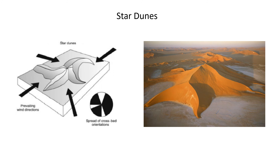Star dunes are sand ridges with a high central point and three or more converging arm ridges, formed in areas where multiple wind directions converge. These dunes will have cross-bedding in multiple directions due to their multiple slip faces.